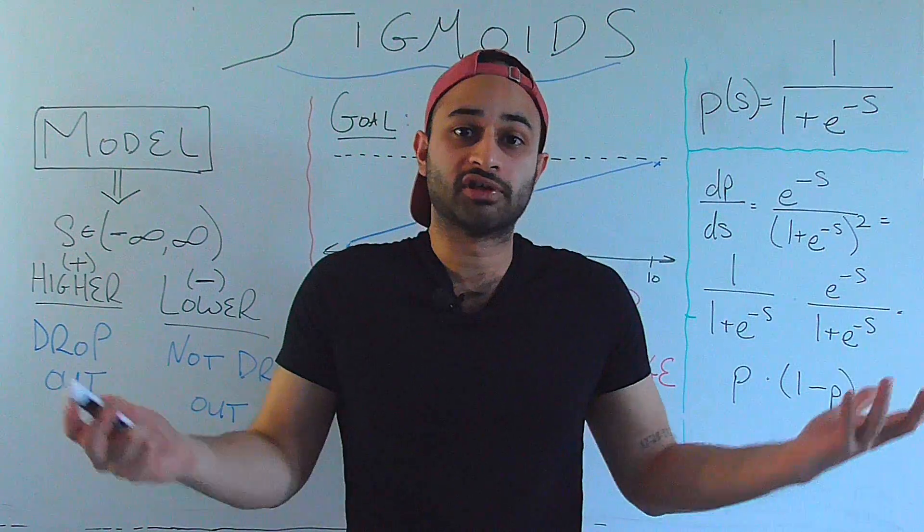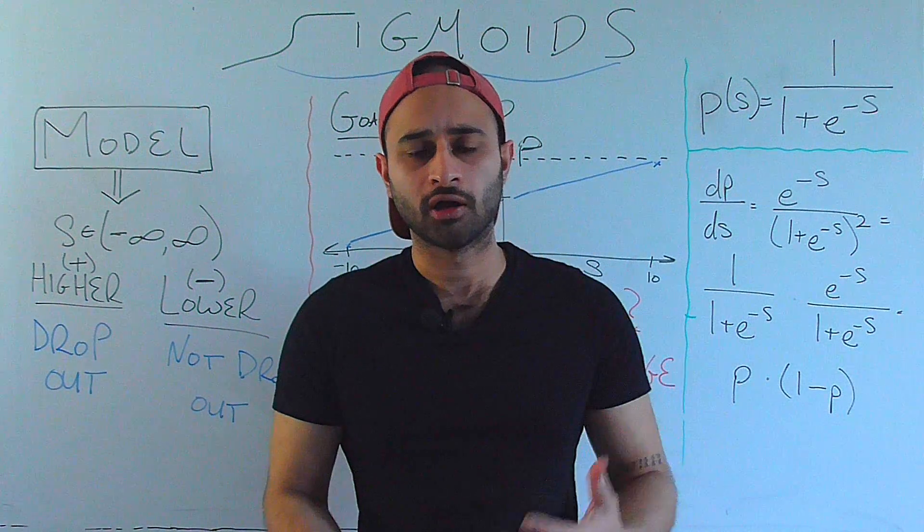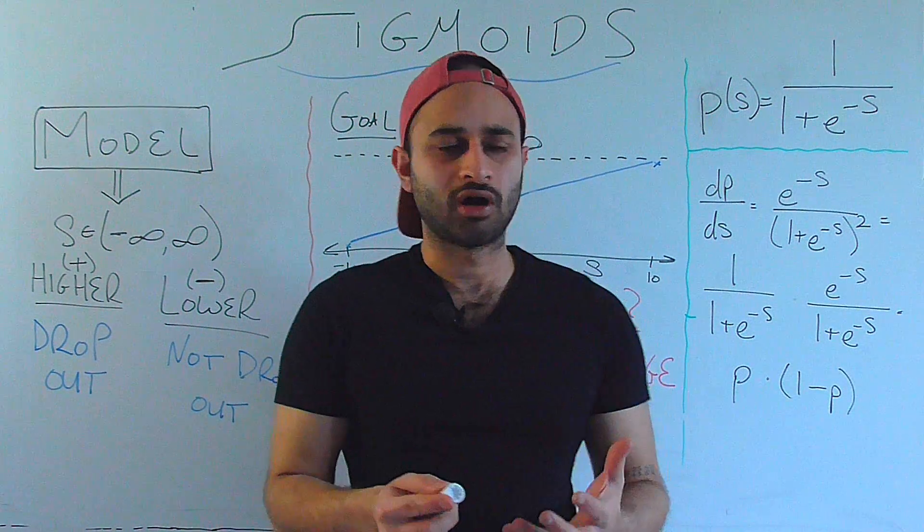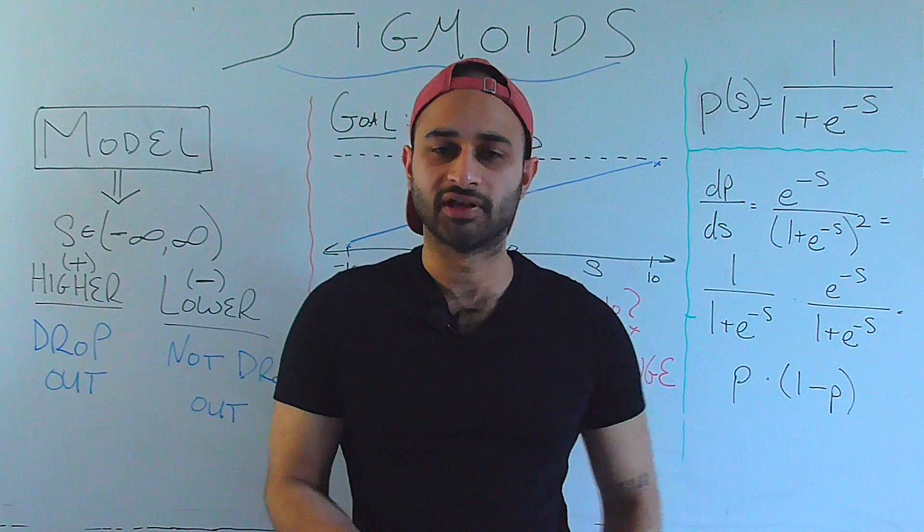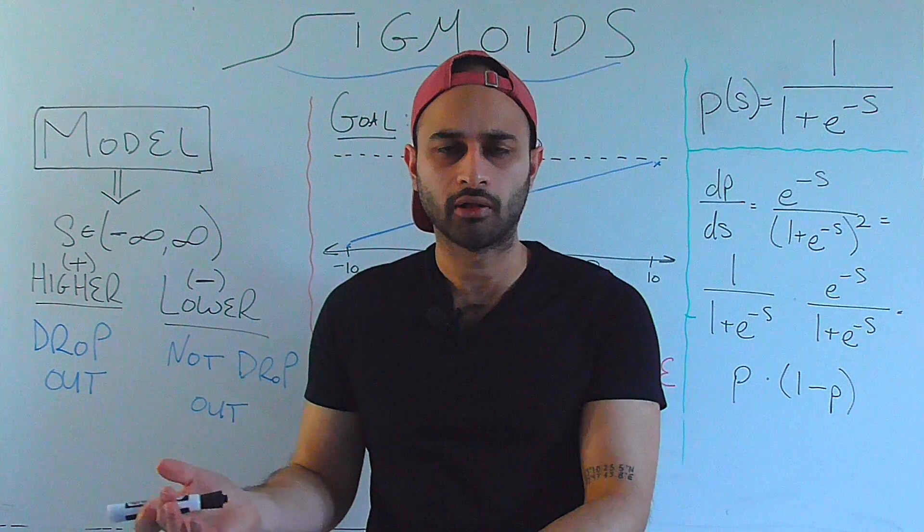Whether you're here because you need to learn the sigmoid function for a class, or because you want to really get into the heart of machine learning and data science, I want to start this discussion not from the mathematics or the formula that defines the sigmoid function, but rather from why do we care about it at all?